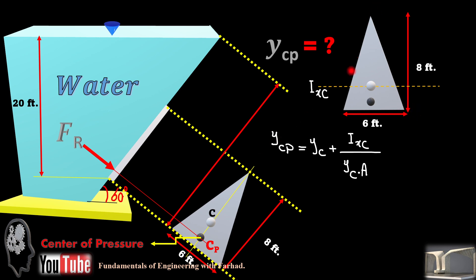So, if this is our triangular gate and this is the moment of inertia Ixc for centroid, and this is centroid and this is center of pressure, the resultant force applies at the center of pressure.